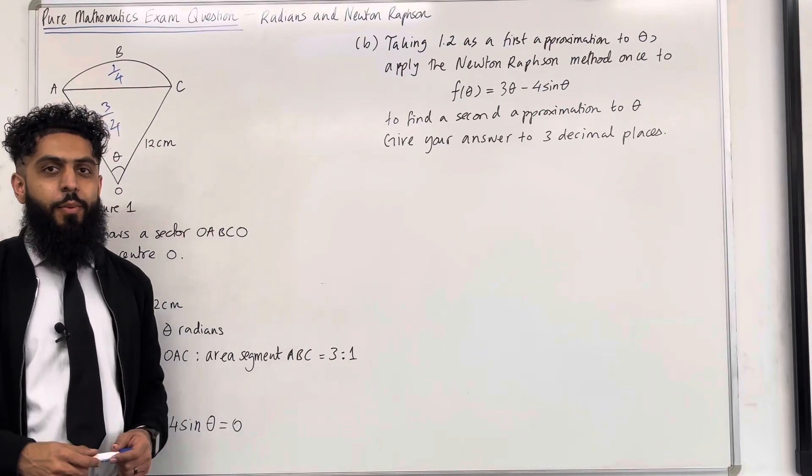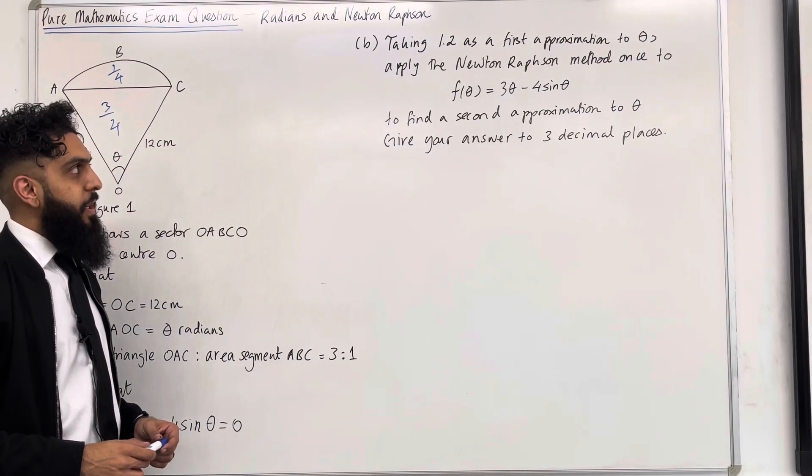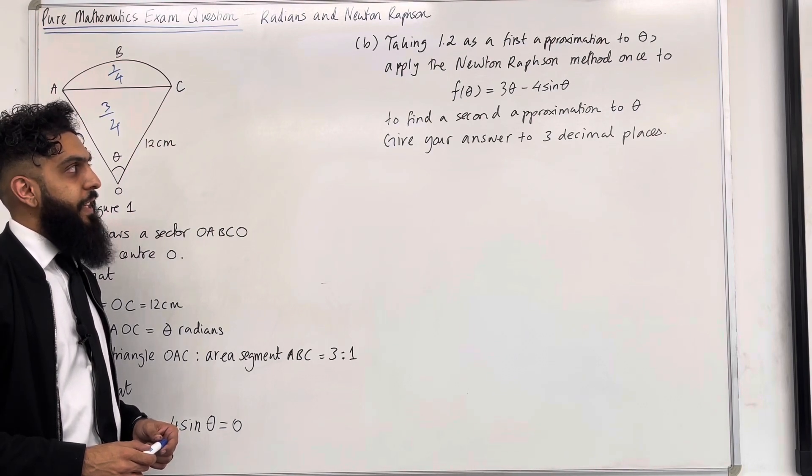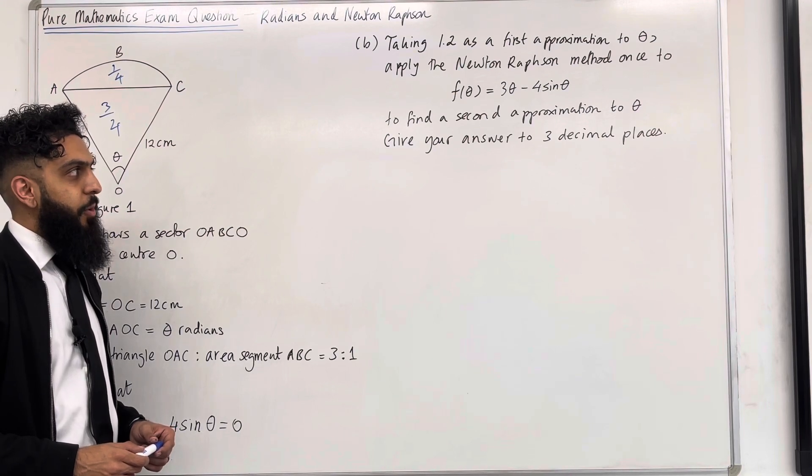Moving on to part B of the question. Taking 1.2 as a first approximation to theta, apply the Newton-Raphson method once to f of theta equals 3 theta minus 4 sine theta to find the second approximation to theta. Give your answer to three decimal places.